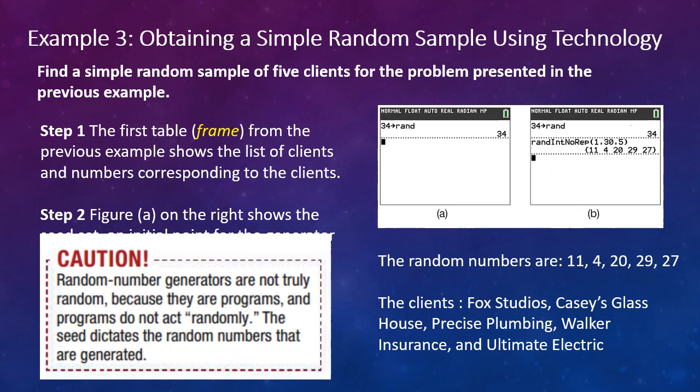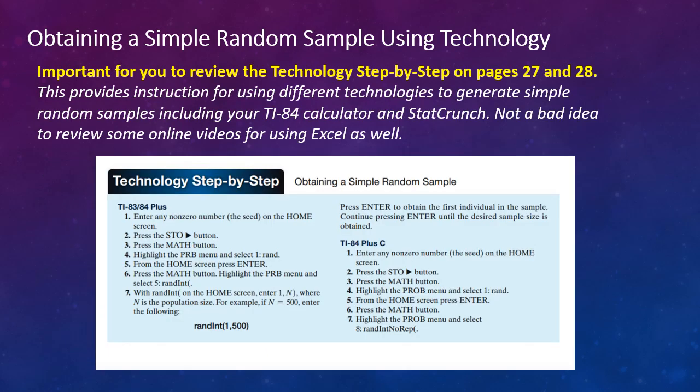Now I haven't gone through this in detail about how to do this on your calculator because I want you to go into your textbook on pages 27 and 28 and review the Technology Step-by-Step. You can see an image here from your textbook, and this provides instruction for using different technologies to generate simple random samples, including your TI-84 calculator that we just saw, but it also does StatCrunch. I'd also recommend that you go online and watch some videos for using Excel for this, specifically generating random samples. But as we go through the course, Excel is used heavily in business, and it would be my judgment that that will serve you well as you get to your—as you graduate and move on to your job.